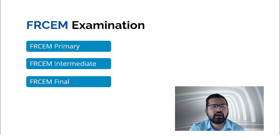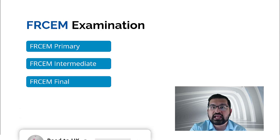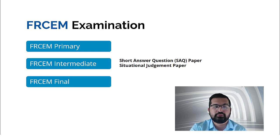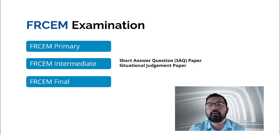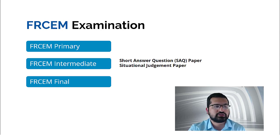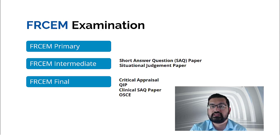About the FRCEM examinations: FRCEM has replaced the previous MRCEM examination, so there is no separate MRCEM anymore. You can obtain membership if you pass FRCEM primary, FRCEM intermediate SAQ, and the MRCEM OSCE — passing those three allows you to apply for membership of the Royal College of Emergency Medicine. Otherwise, FRCEM is the only examination for the emergency medicine training pathway, integrated into the curriculum. FRCEM final has four parts: critical appraisal SAQ, QIP, clinical SAQ, and OSCE, which you take in the last stage of higher specialty training.